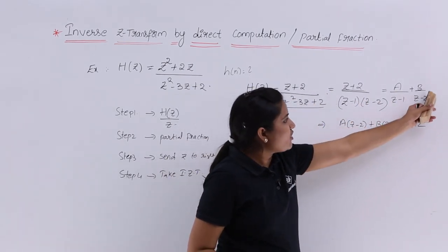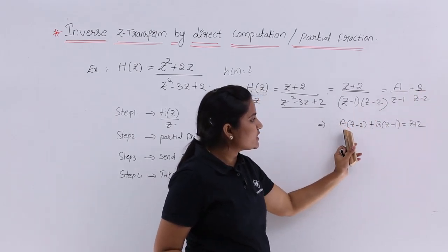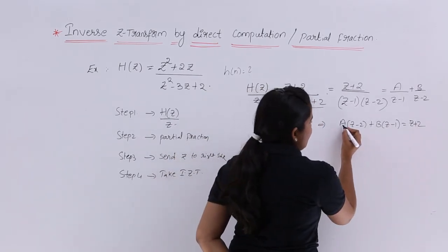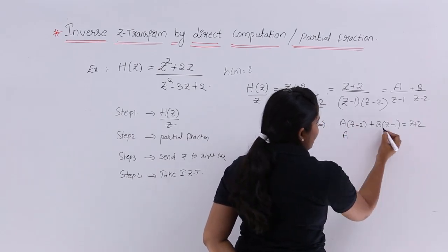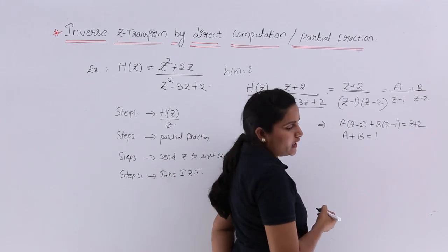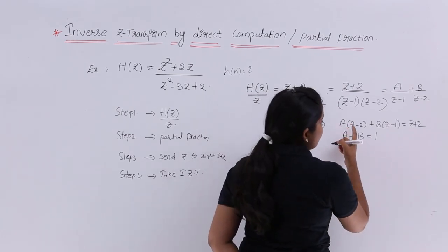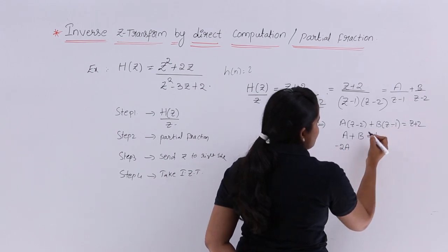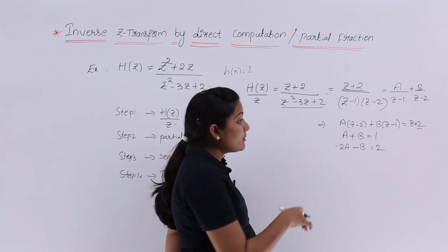Now I want to compare coefficients. The denominators cancel, leaving A(z - 2) + B(z - 1) = z + 2. Comparing the z coefficients: A + B = 1. Comparing the constant terms: -2A - B = 2. These are the two equations I need to solve to find A and B.